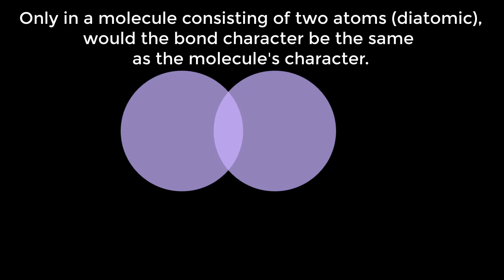However, we need to consider that only in a molecule consisting of two atoms would the bond character be the same as the molecule's character. And there are extremely few diatomic molecules. In all molecules with more than two atoms, a variety of factors including bond polarity has to be considered to determine the character of the entire molecule in being nonpolar or polar, which is addressed in the video linked here, how to determine the polarity of a molecule.